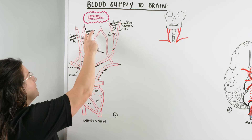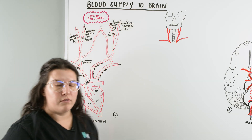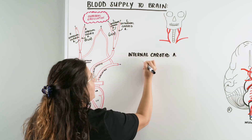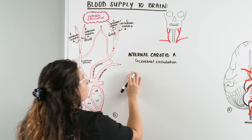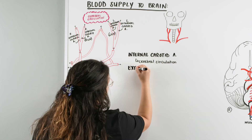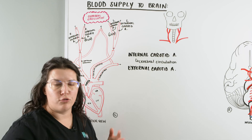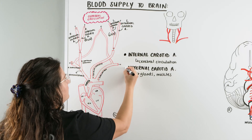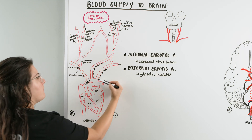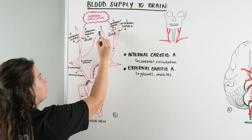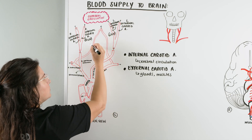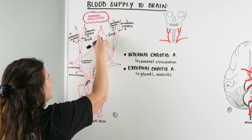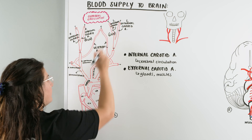The internal carotid arteries deliver blood into our cerebral circulation. The external carotid arteries deliver blood to extracranial areas — things like glands and muscles. Now we've still got two other structures coming off the subclavians. From our left subclavian and right subclavian, there are vessels coming up through — these are called our vertebral arteries, the left vertebral and right vertebral arteries. These two are also going to help deliver blood into our cerebral circulation.